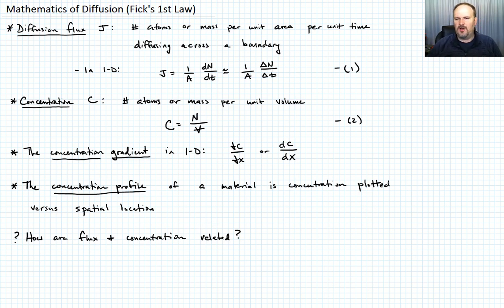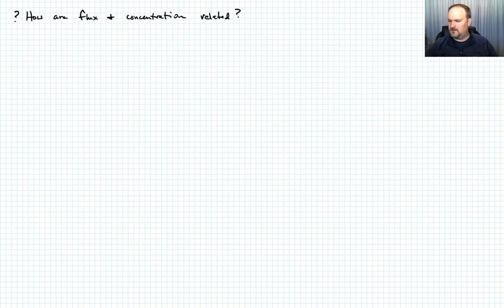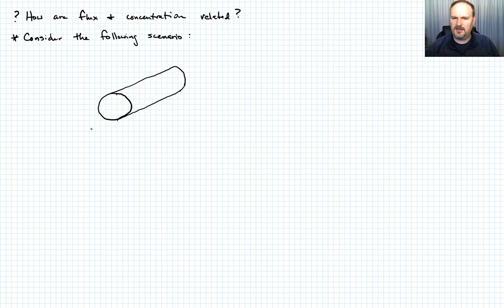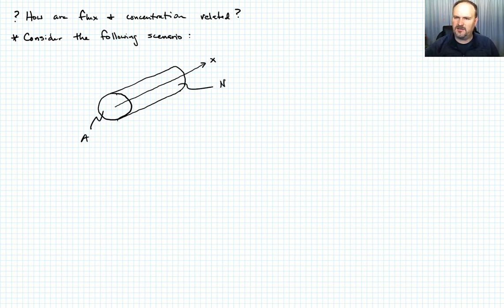Let me draw a picture. We're going to consider a cylinder of material with some cross-sectional area A. We'll define a line right down the center of the cylinder as our coordinate x — so this is 1D. Within this cylinder there is a concentration profile given by N as a function of x.